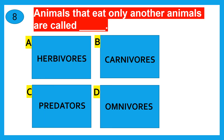Animals that eat only other animals are called — herbivores, carnivores, predators, or omnivores? The correct answer is carnivores.